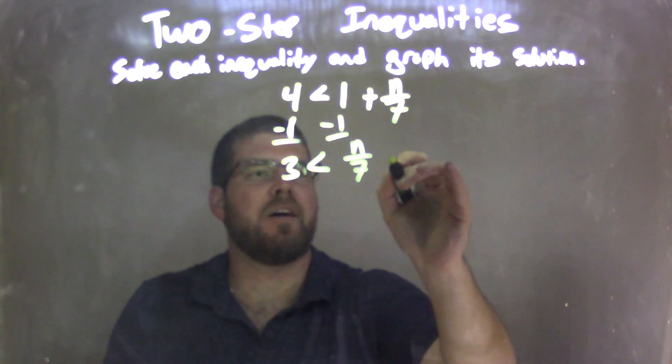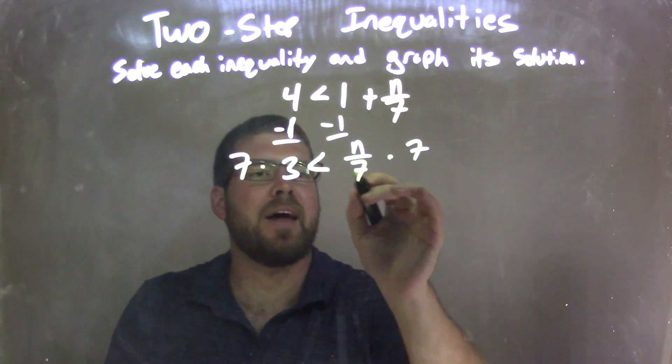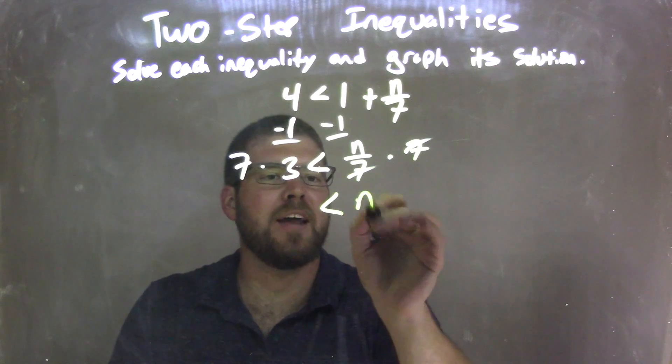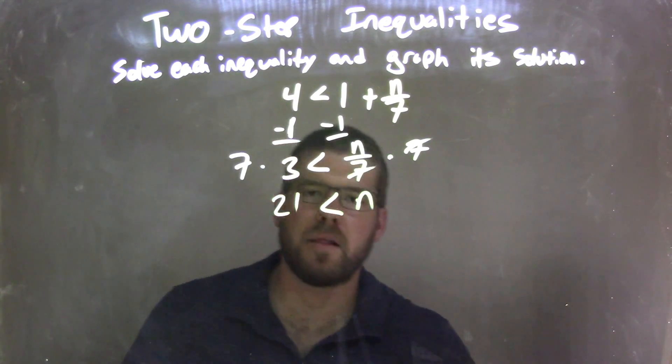Now I need to get n by itself, so to do that I multiply 7 to both sides, and that eliminates the 7s over here, giving me n by itself on the right, and 7 times 3 being 21 on the left.